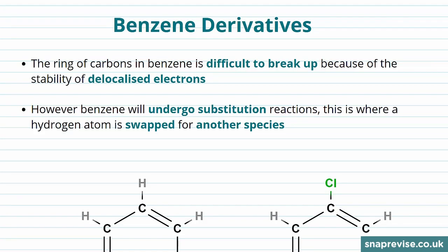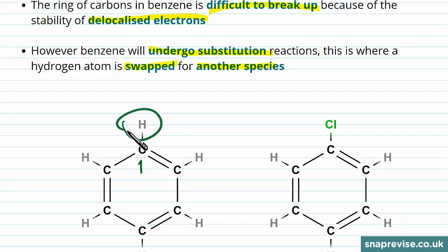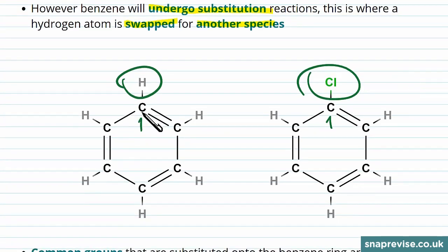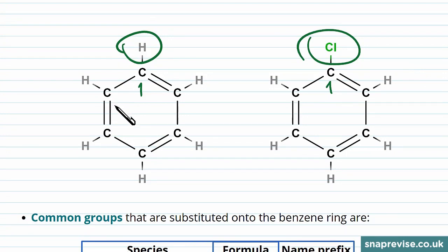As we've seen in our other videos on benzene, it's difficult to break up aromatic rings because we have delocalised electrons which increase the stability. However, aromatic rings will undergo substitution reactions. These are reactions where one of the hydrogen atoms on a benzene ring is swapped for another species. So here, if we were to label this carbon 1, we would remove the hydrogen attached and then attach a chlorine atom. It's worth noting that although we've shown the structure of benzene here as alternating single and double bonds, this is just for convenience and the actual structure is more complicated with a delocalised system. It's worth watching our video on the structure of benzene to see that in more detail.